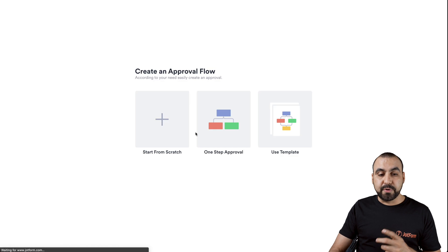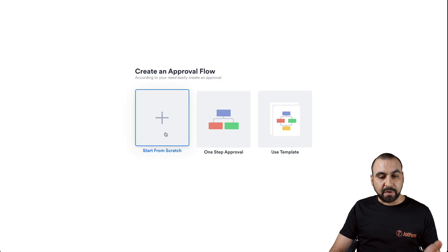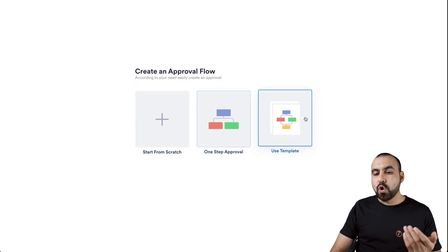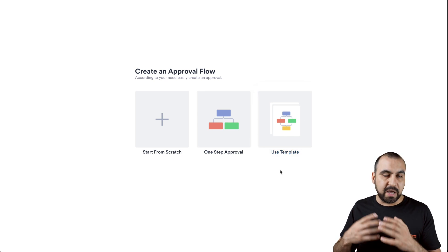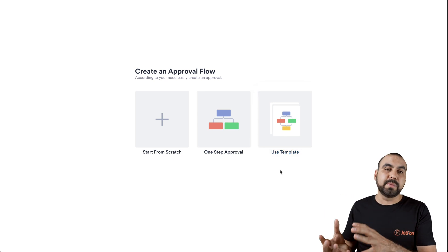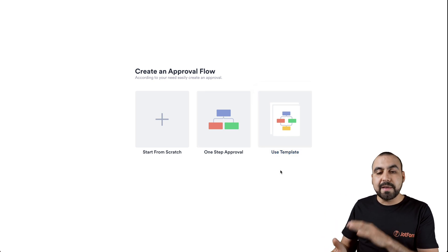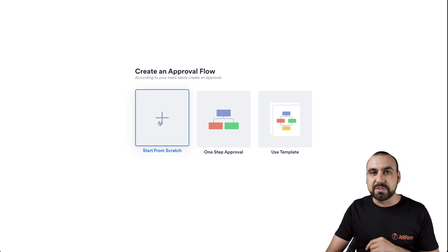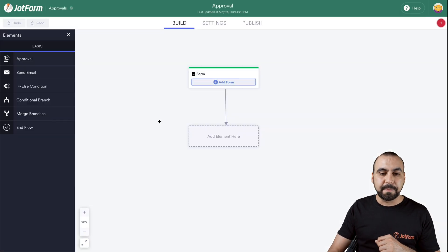To get started, let's go into Create Approval. We're going to get three options: start from scratch, one-step approval for something really simple, or use a template if you want to use something that's already made. That makes it quicker. In this case, we'll start from scratch.